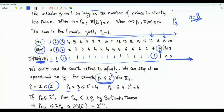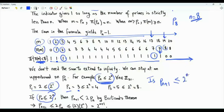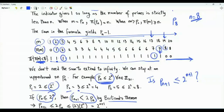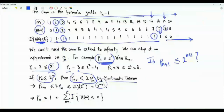Here is the base case, and if we assume this is true for n, the question becomes: is it true for n plus 1? Suppose p_n is indeed less than or equal to 2^n — is p_{n+1} less than or equal to 2^{n+1}? The answer is yes. Using Bertrand's postulate, which states that p_{n+1} is strictly less than 2·p_n, and since p_n is assumed to be less than or equal to 2^n, we are done: p_{n+1} is less than or equal to 2^{n+1}. We can modify our formula for p_n so that the summation runs from 1 to 2^n.